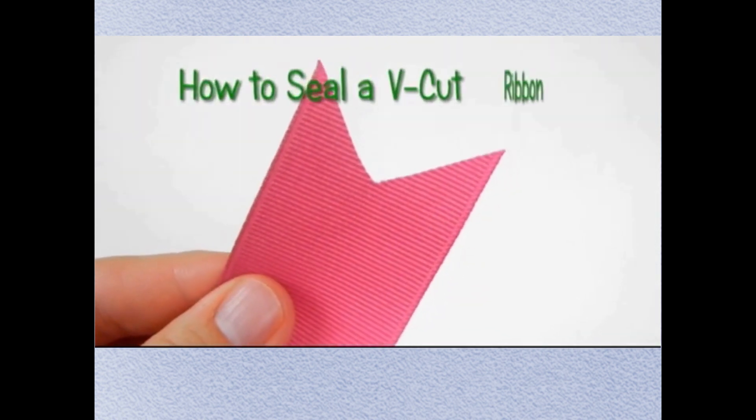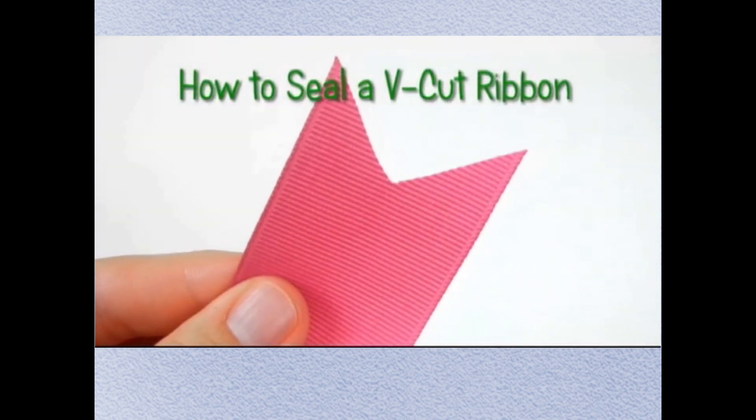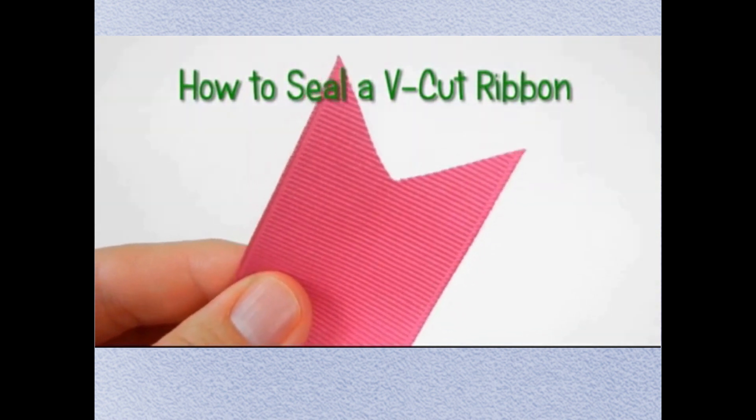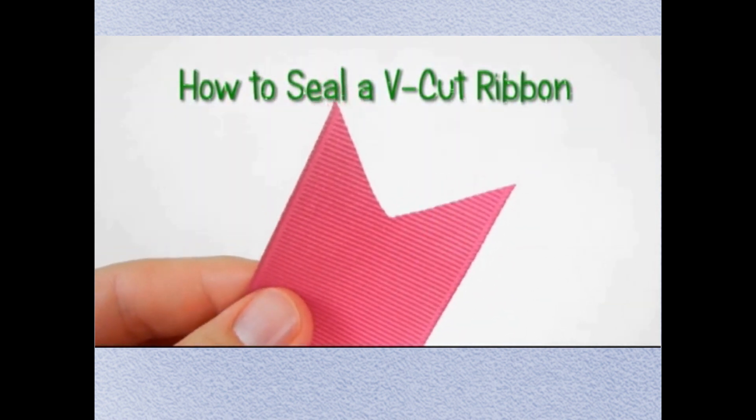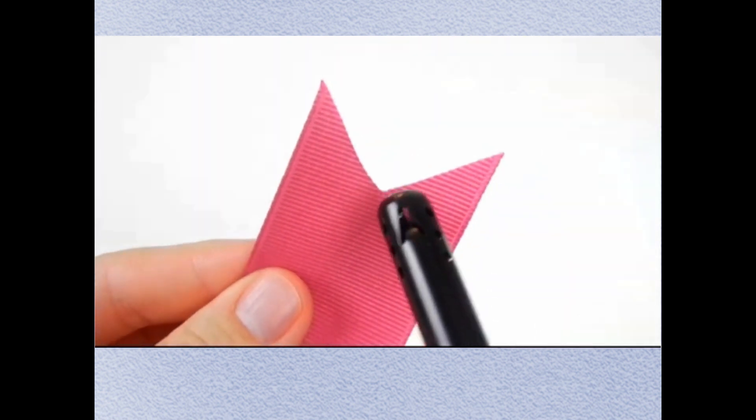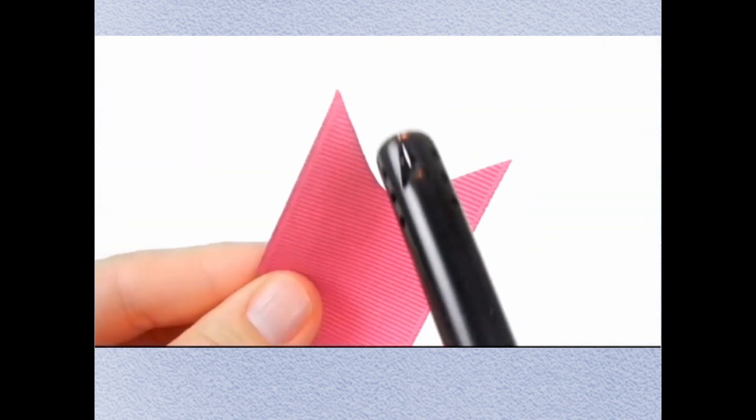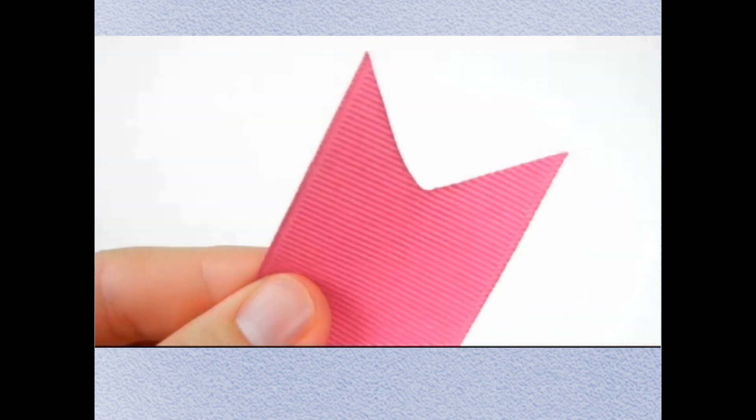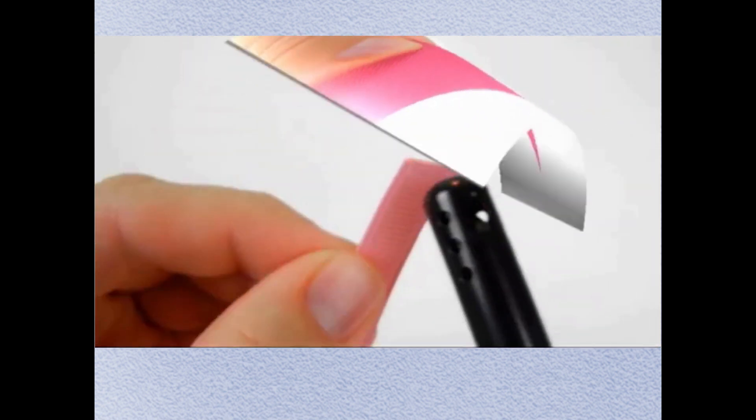A V-cut is a very popular way to cut your ribbon ends, and so I'm going to show you how to seal those. You're going to want to go from the inside out. All done.